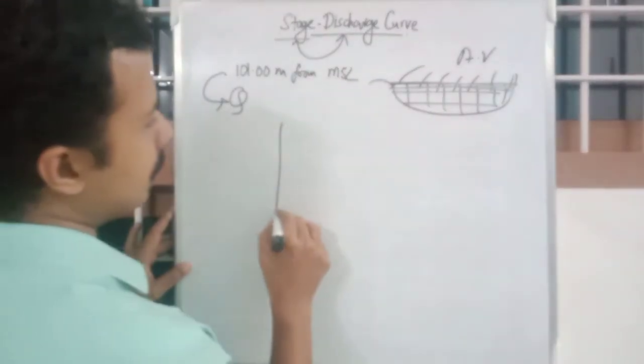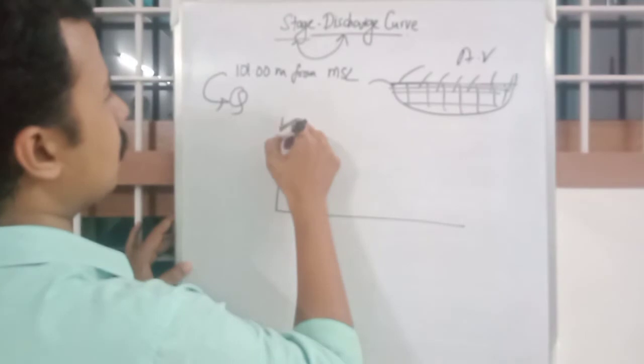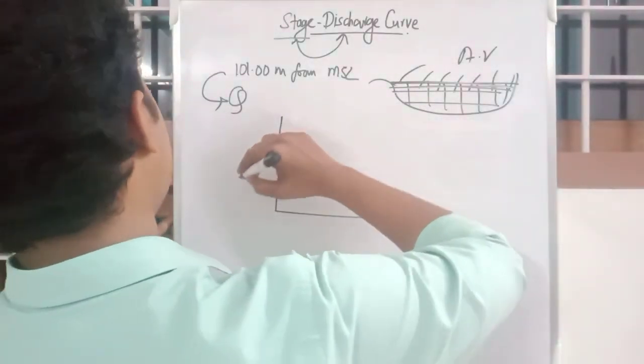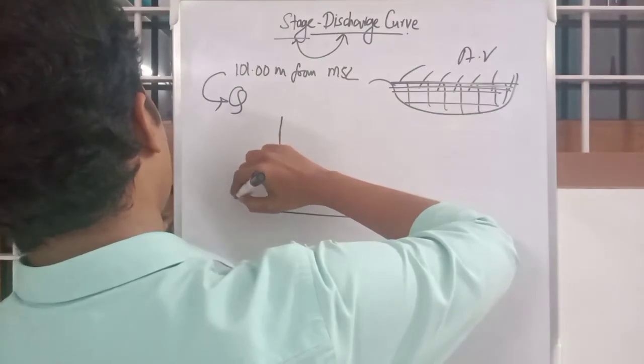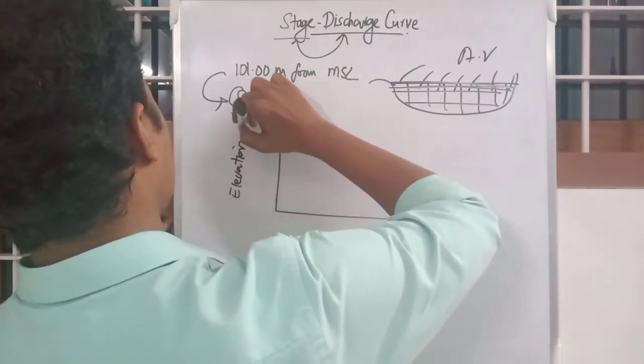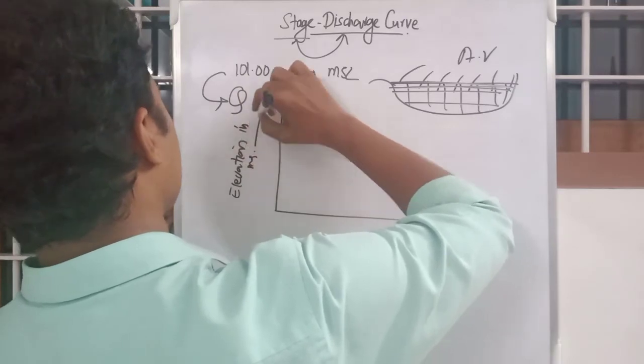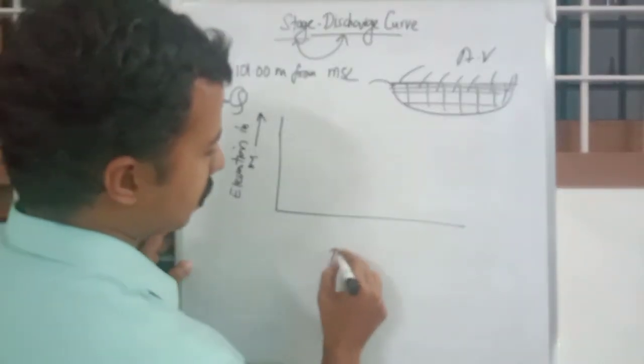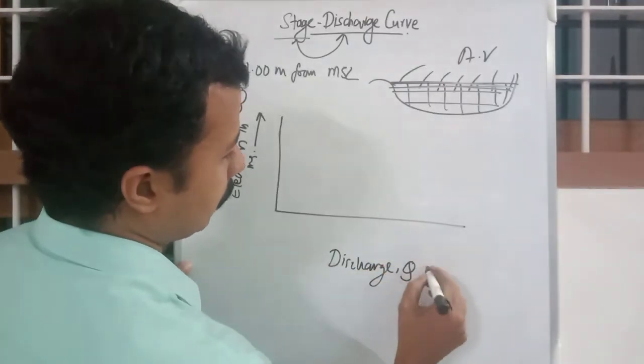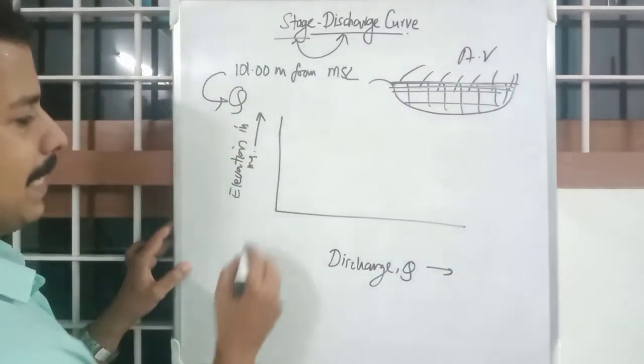Stage discharge curve is the curve that is having stage or elevation in meters in y-axis and discharge q in x-axis.